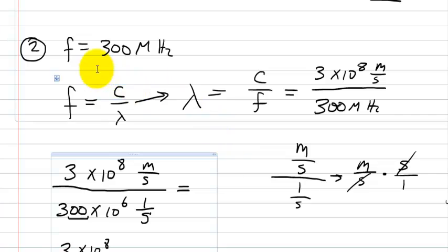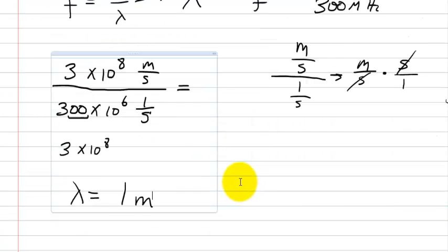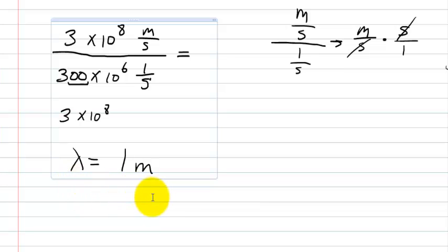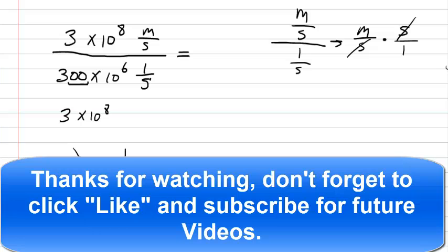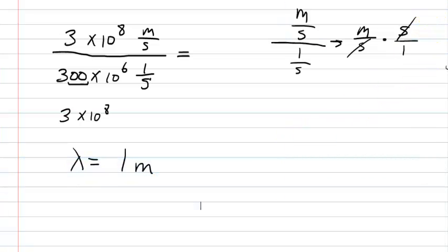If you have a frequency of 300 megahertz, what you're going to end up getting is a wavelength of 1 meter. Okay, that's pretty straightforward. I hope that helped you out. Good luck in your classes, and don't forget to review the material, because after a while you're going to forget it. Have a good day.